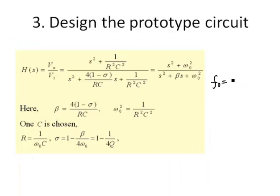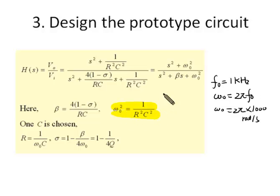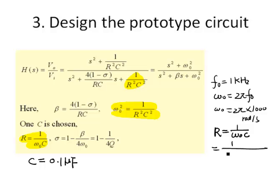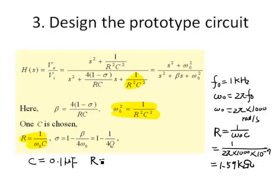Let's work on the first stage, the high Q band reject filter. The central frequency is 1 kHz, so the central frequency in radians per second should be 2π times 1k. From the transfer function, we can see that ω₀ squared equals 1 over R squared C squared. We can derive that resistance should be 1 over ω₀ times C. We can pick a standard capacitance of 0.1 mF. With ω₀ equal to 2π times 1000 and C equal to 0.1 mF, we get R equal to 1.59 kΩ. We can choose a 1.6 kΩ standard resistor.